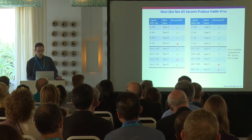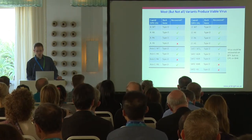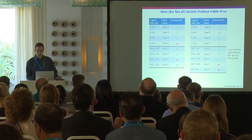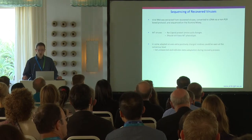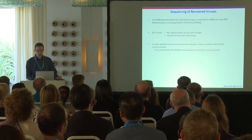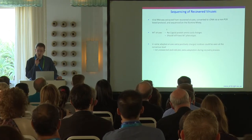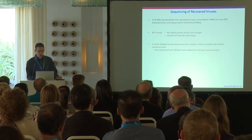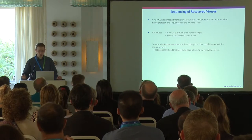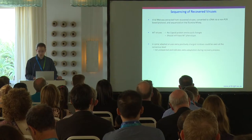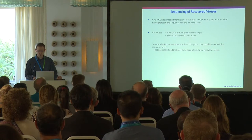For the type A's, we could recover all but the HS variant. For the Asia's, all but the RK. All the O's were recovered. SAT was a bit more tricky; we only recovered wild-type and one of the five-fold axis mutants. Once the viruses were produced, they were sequenced using an Illumina MiSeq protocol. For the wild-type viruses, there were no capsid protein amino acid changes, and they should still have a wild-type phenotype for comparison. In a minority of the adaptive viruses, one extra positively charged residue could sometimes be seen at the consensus level, indicating some extra adaptation during the recovery process.